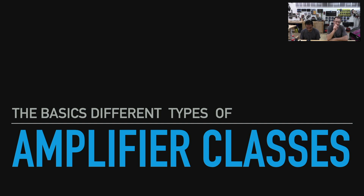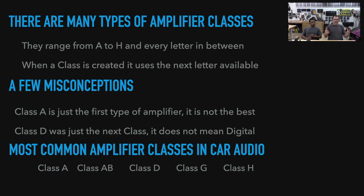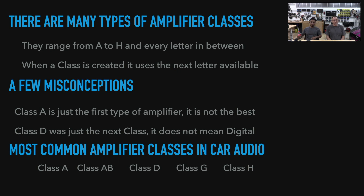Now a lot of people don't understand that there are amplifier classes ranging from A through H — A, B, C, D, E, F, G, H — there is an amplifier in each one of those. However, what you have to keep in mind is that they're not all for audio. They range from A to H in every letter in between. When a class is created, it uses the next letter available. We're on H. A few misconceptions: Class A is just the first type of amplifier — it is not the best. A lot of people will argue that point, but it's just something to keep in mind.